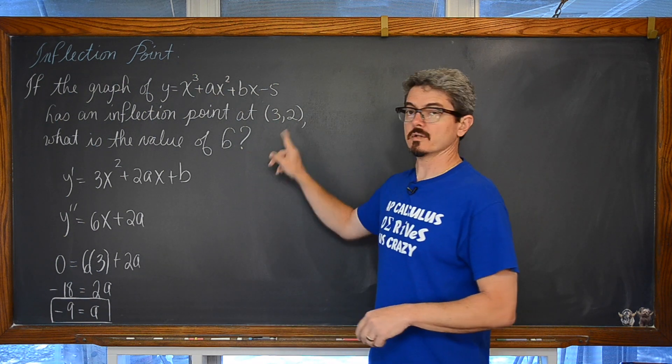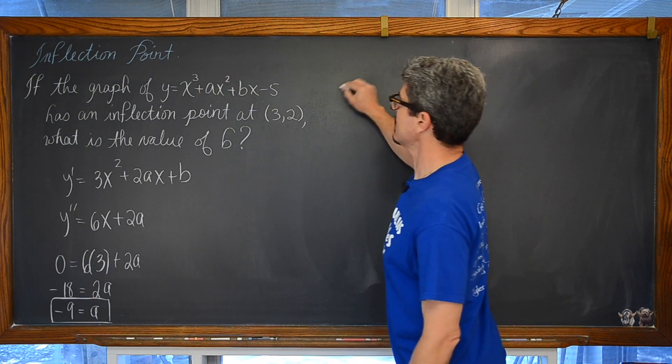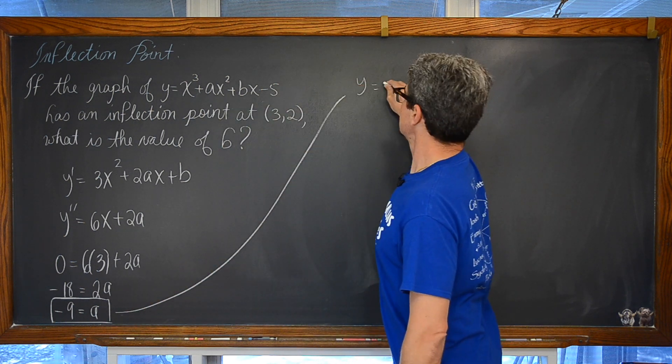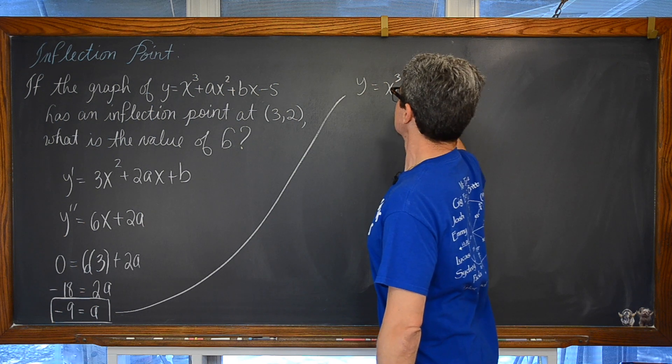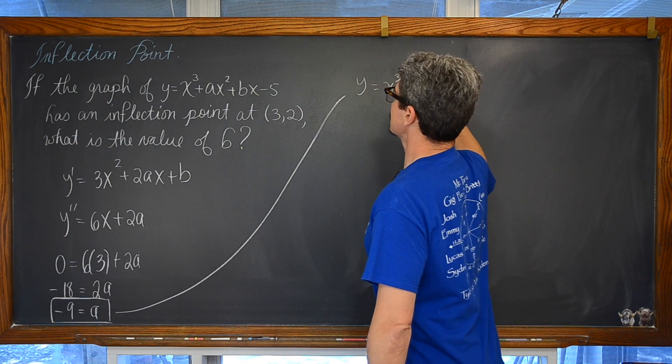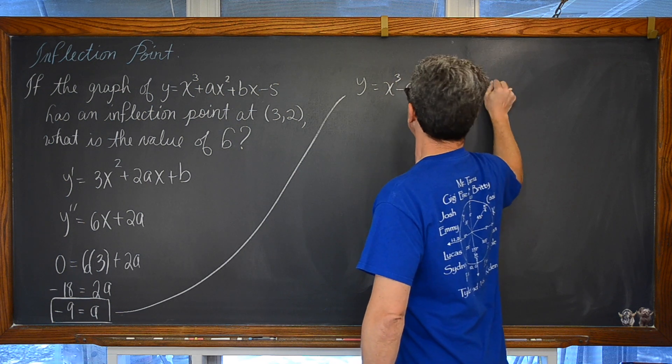But I do know that the y coordinate is 2. So what we are going to do here is we are going to say okay, what we have now from this is y equals x cubed plus, not a, but now negative 9x squared plus bx minus 5.